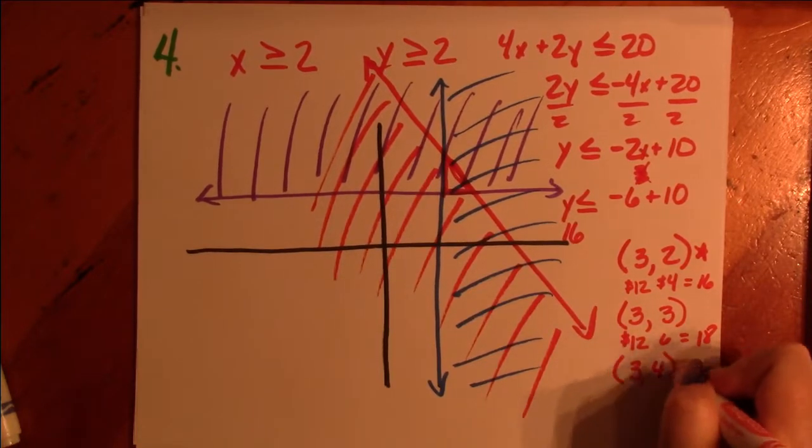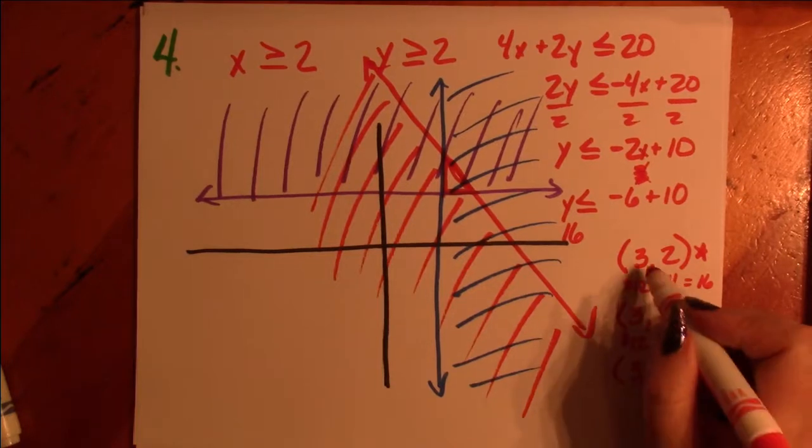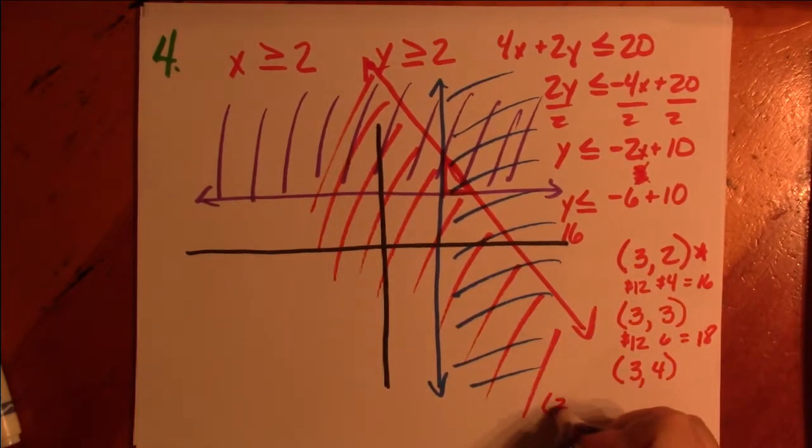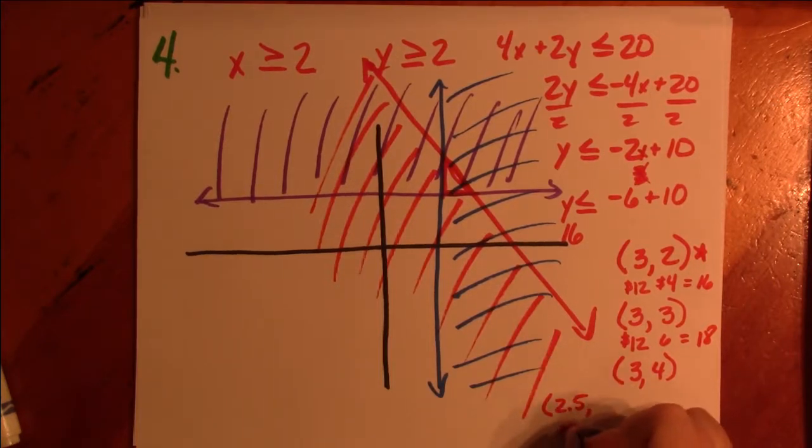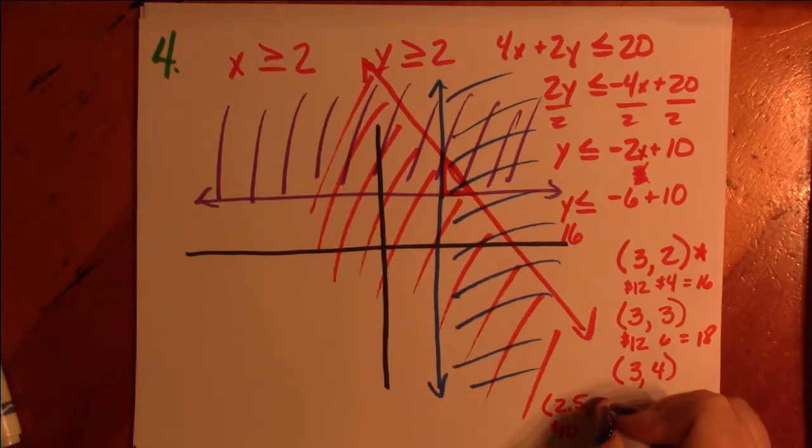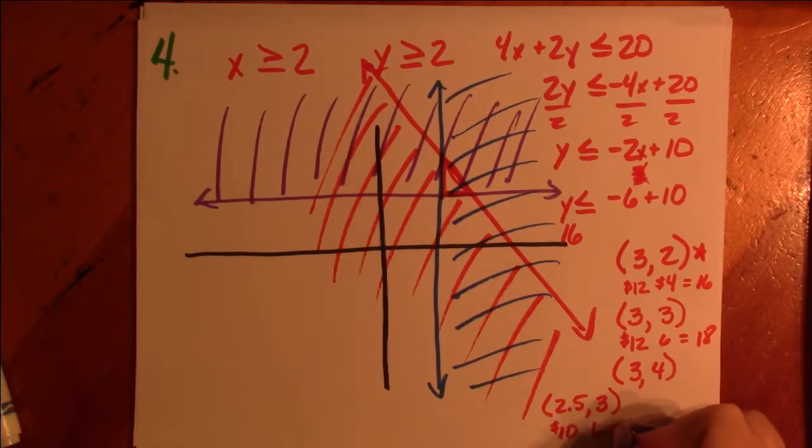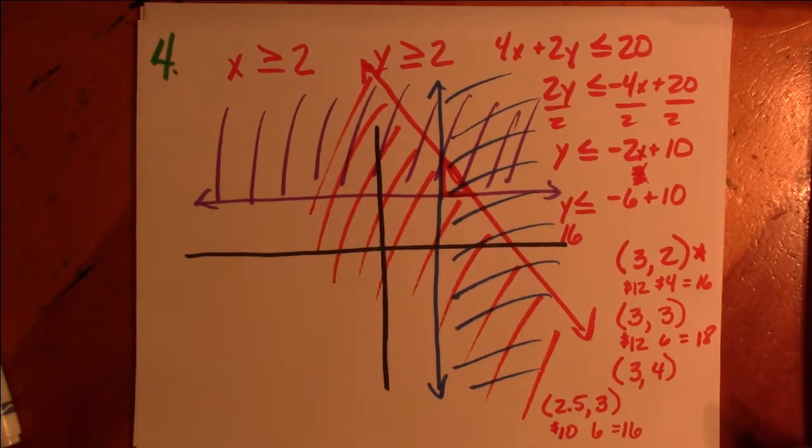It could be 3 and 4. It could be that we go under 3. What if we get 2 and a half pounds? 2 and a half times 4 is 10. And could we get 3 pounds of cheddar? 3 times 2 is 6. That equals 16. So yes, that works too.